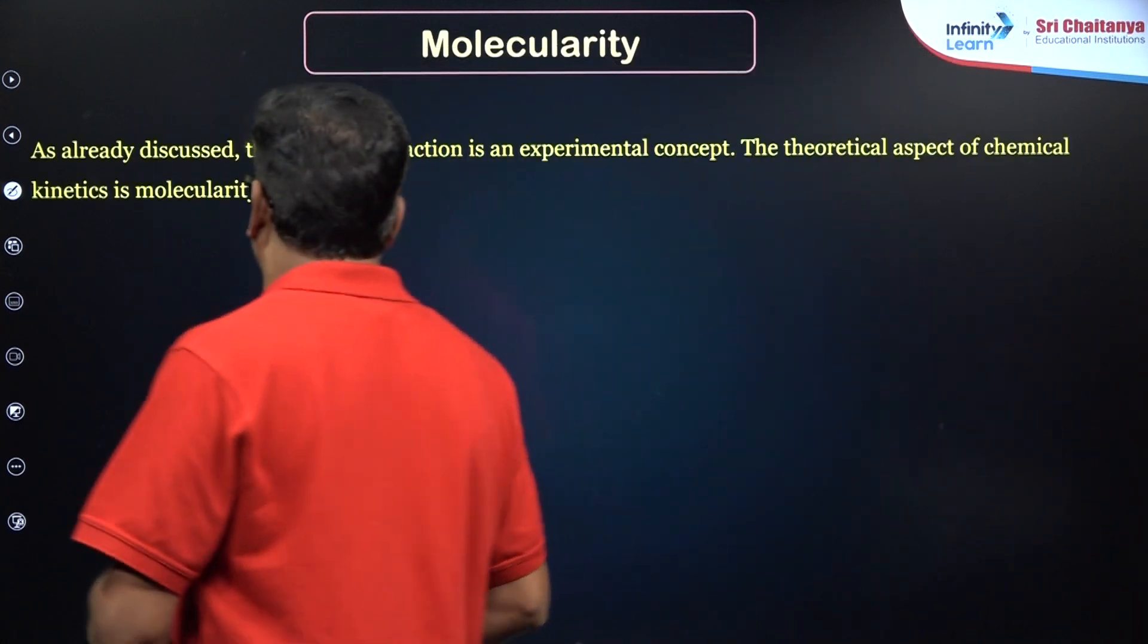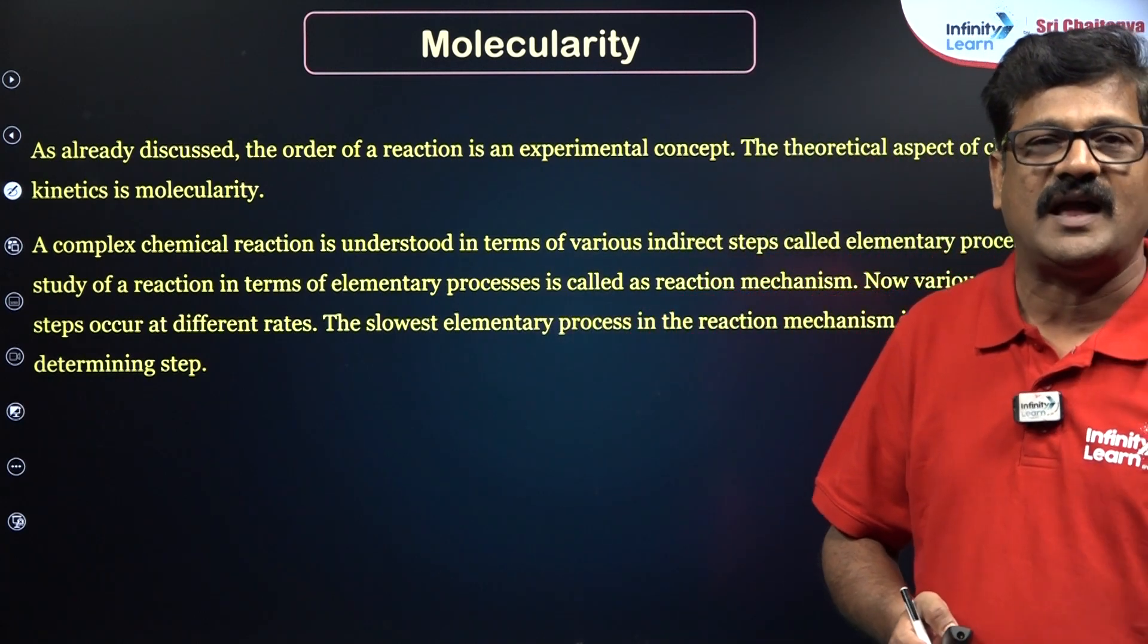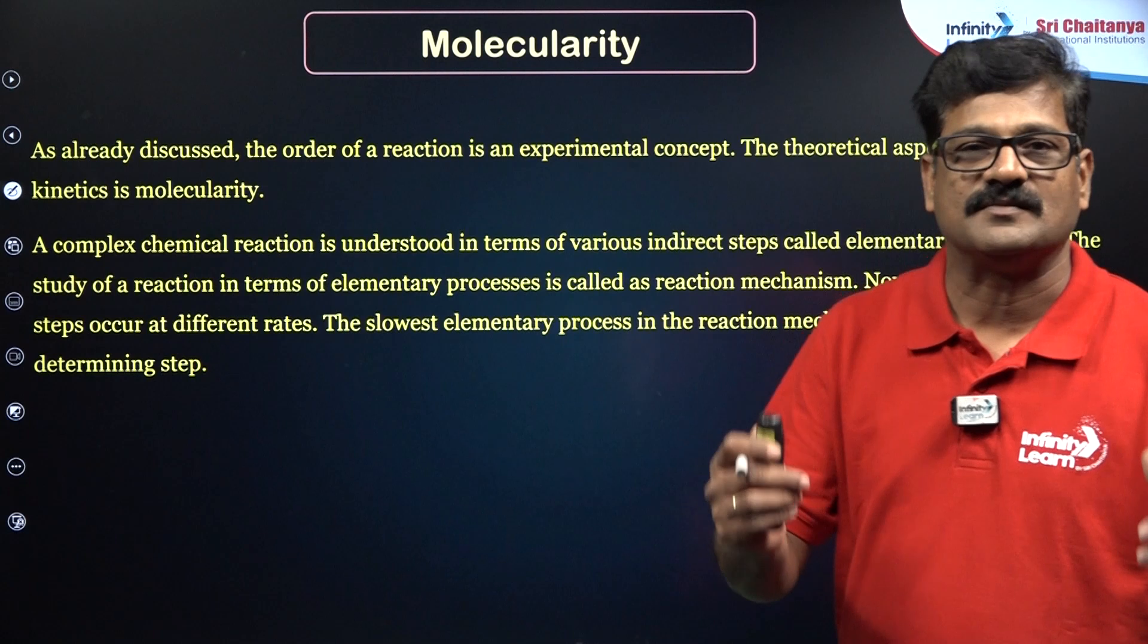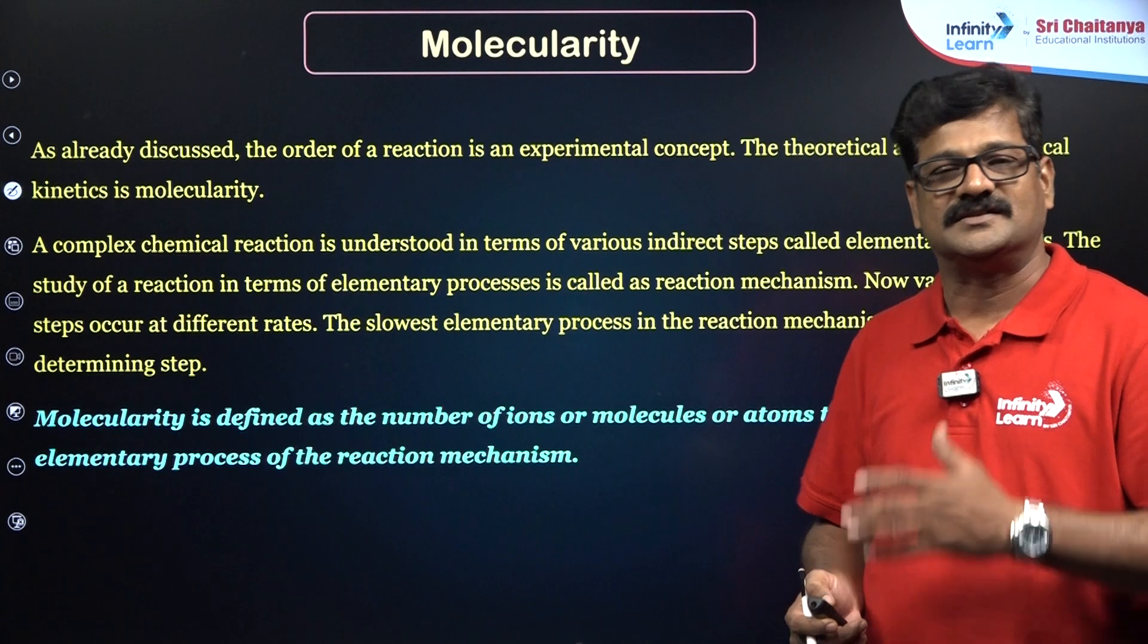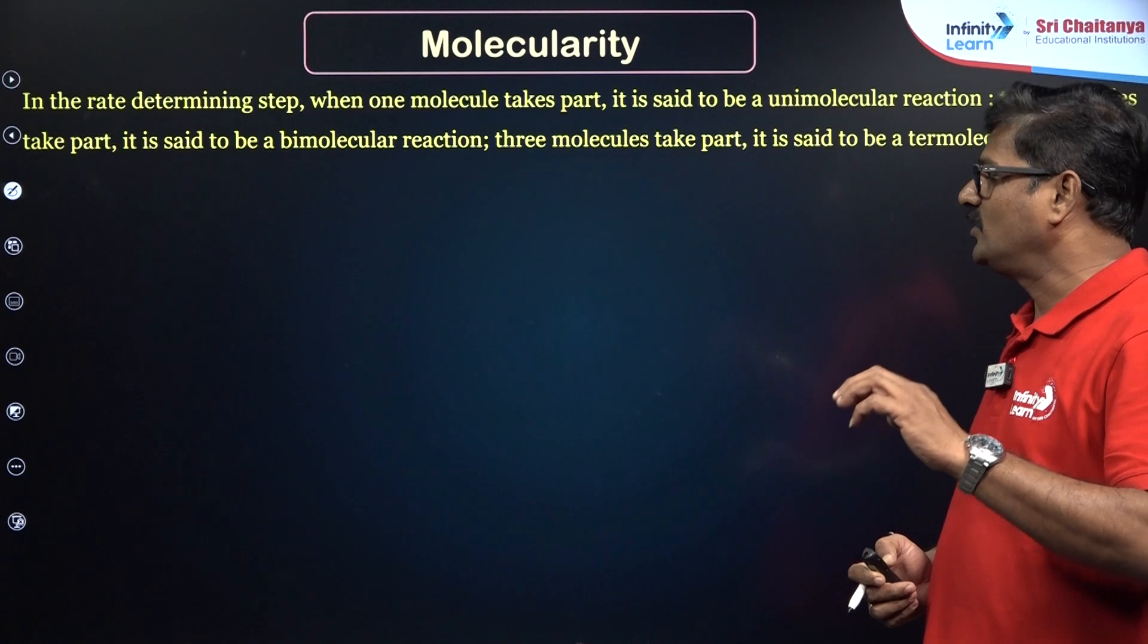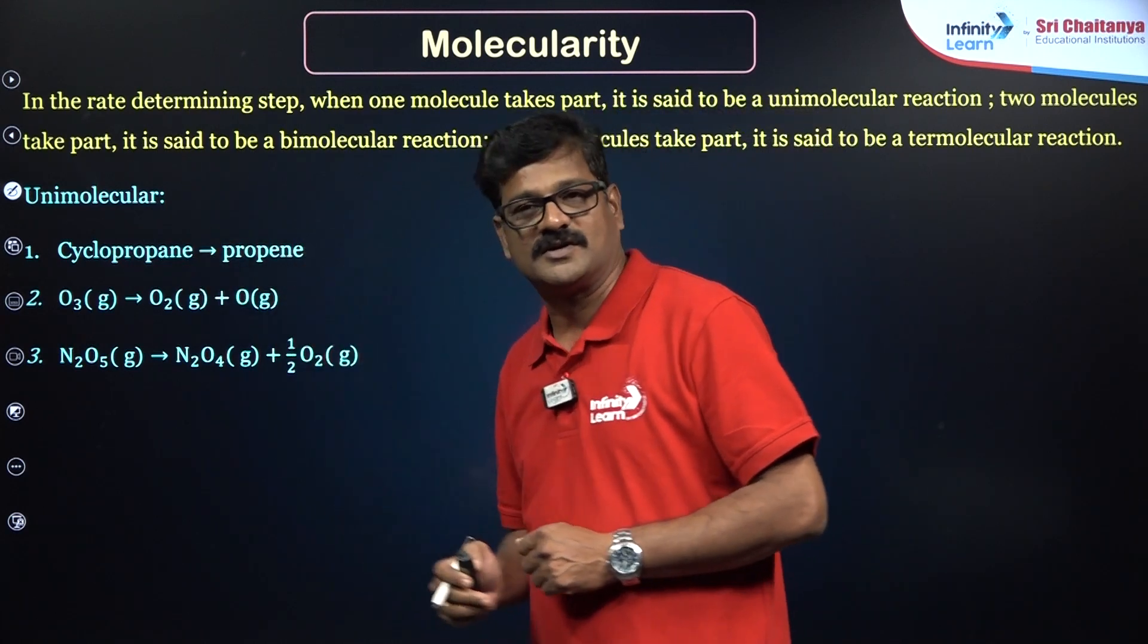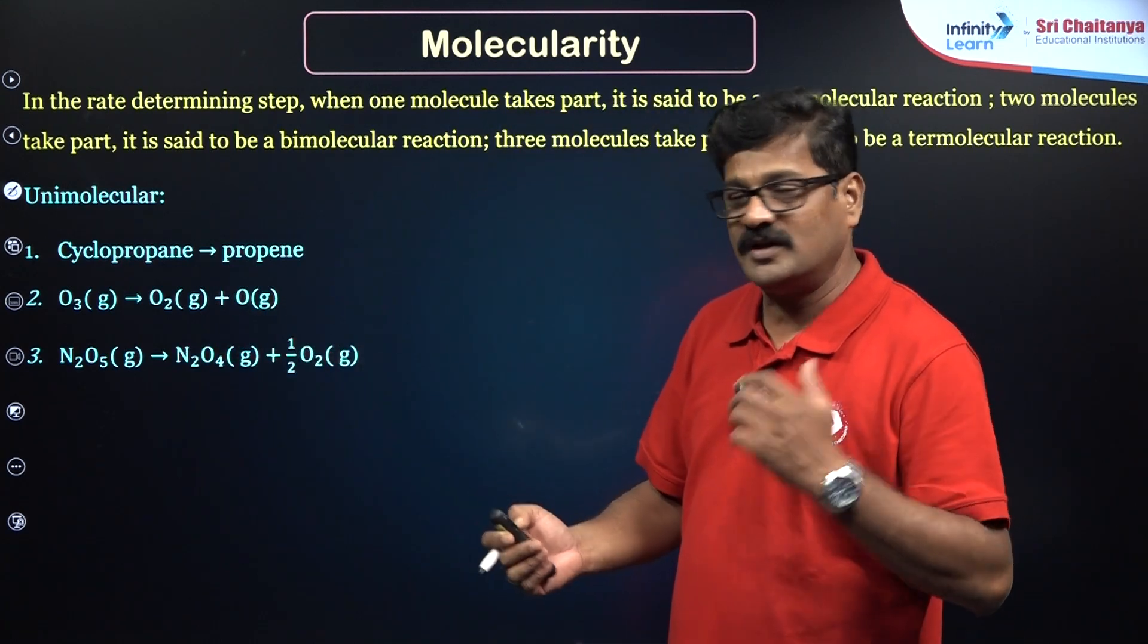Now, molecularity. When the reaction is taking place, there's a collision between the reactant molecules. The number of reacting species that are making a collision in a single step of a reaction is called molecularity. Molecularity is theoretical, and it can be 1, 2, or 3. It cannot be 0, it cannot be greater than 3. You consider the rate-determining step for molecularity. For unimolecular, examples are: cyclopropane converted into propene, ozone decomposition, and N₂O₅ decomposition.